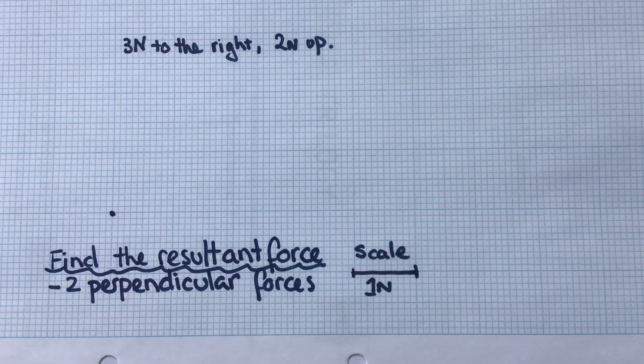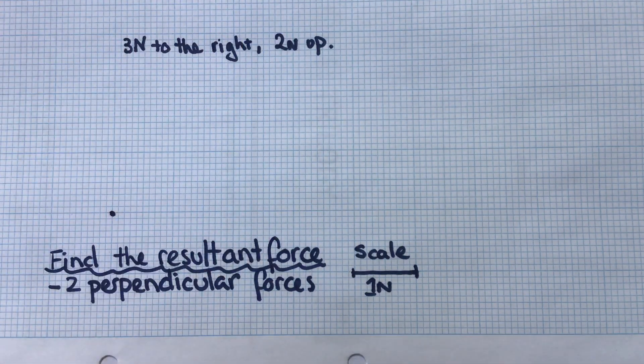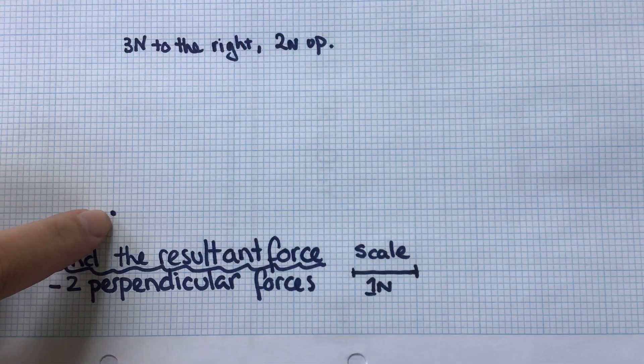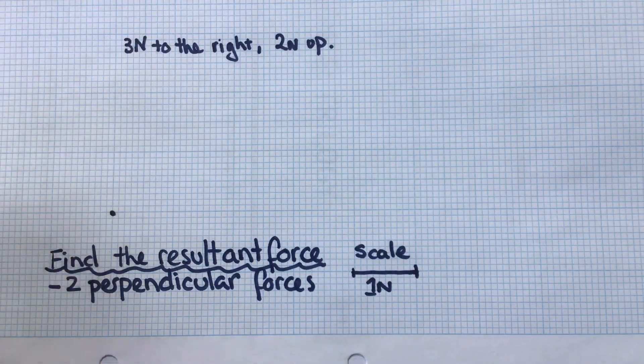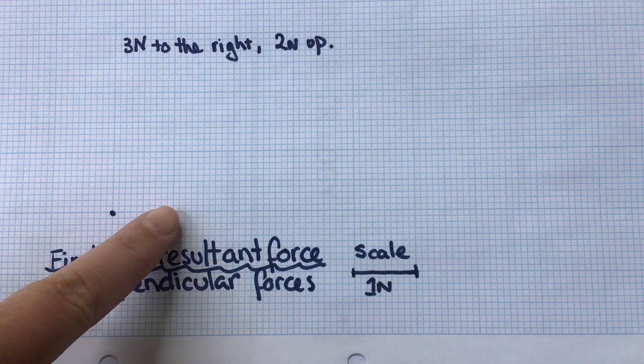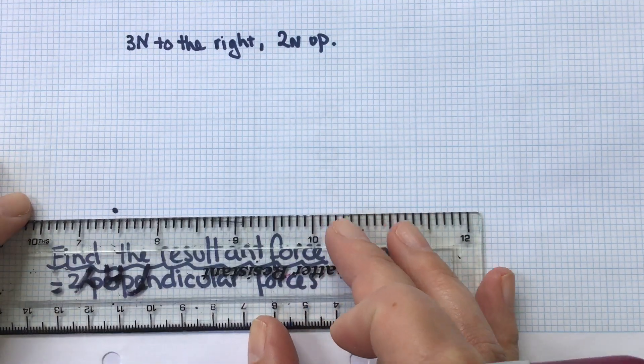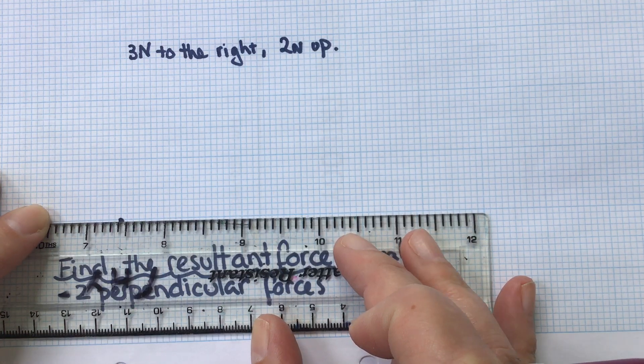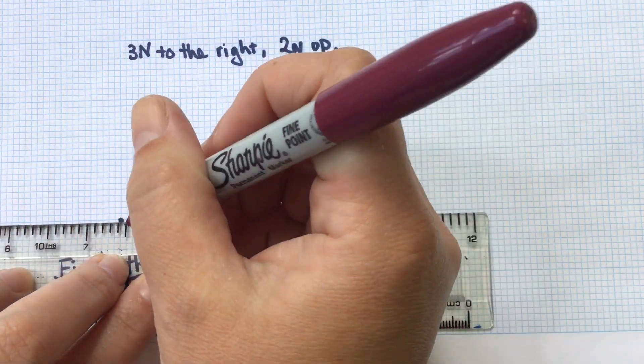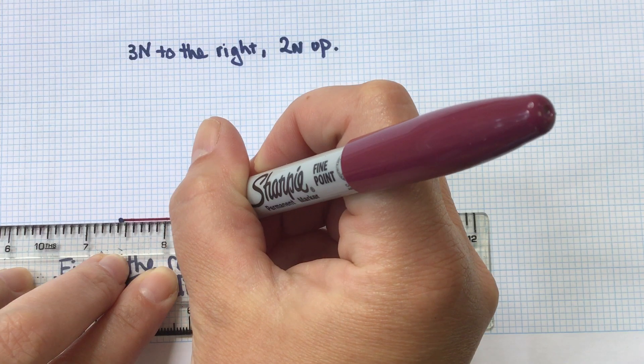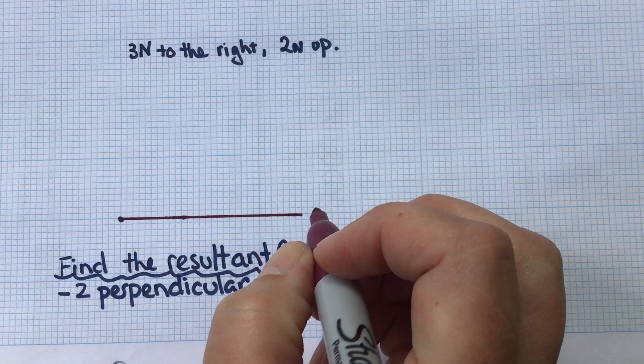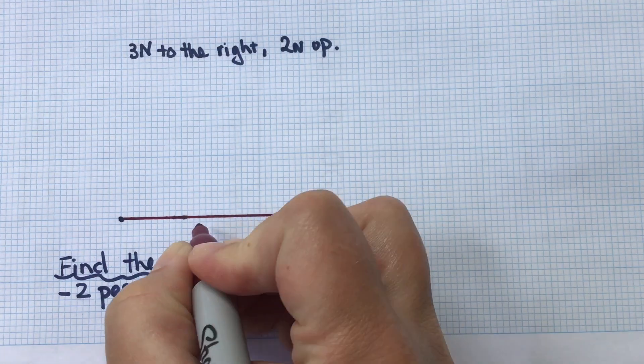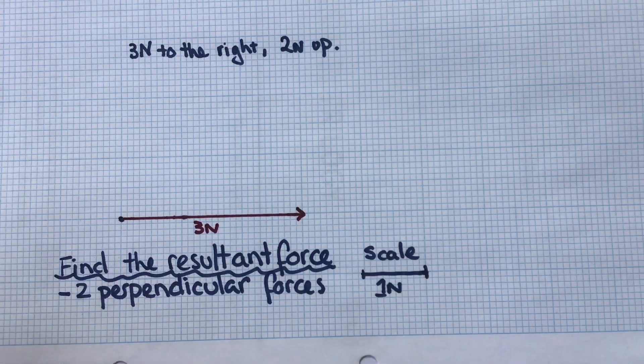Let's have a look at what we do. We're going to draw these two forces tip to tail from this start point I've marked on here. First of all, I'm going to draw my 3 newtons to the right force. That's going to be three large boxes. So with a ruler, I start drawing my scale diagram according to the scale: one, two, three. So this is my 3 newton force to the right.